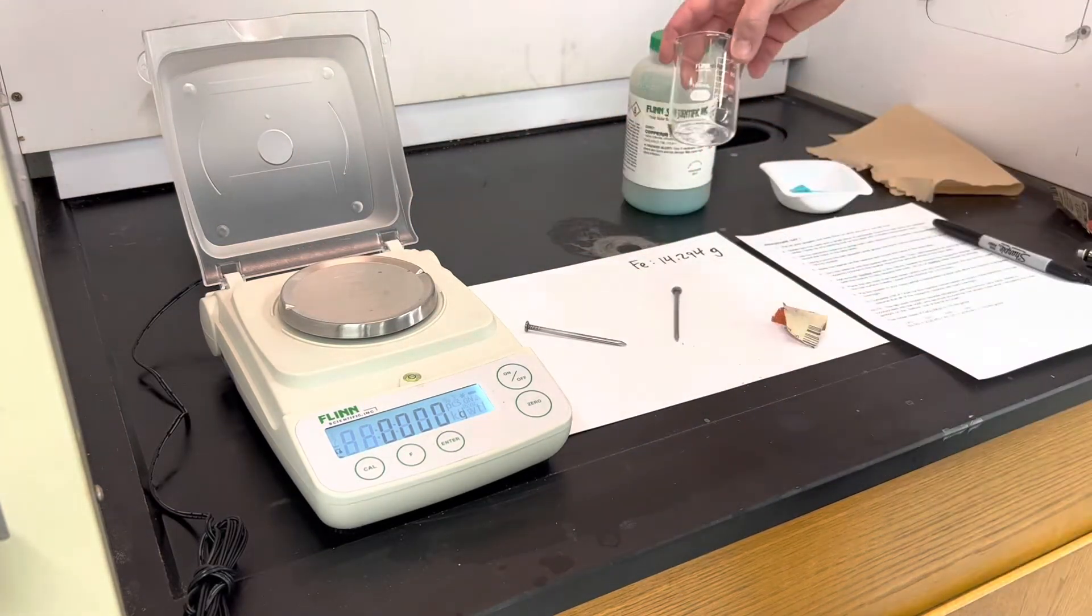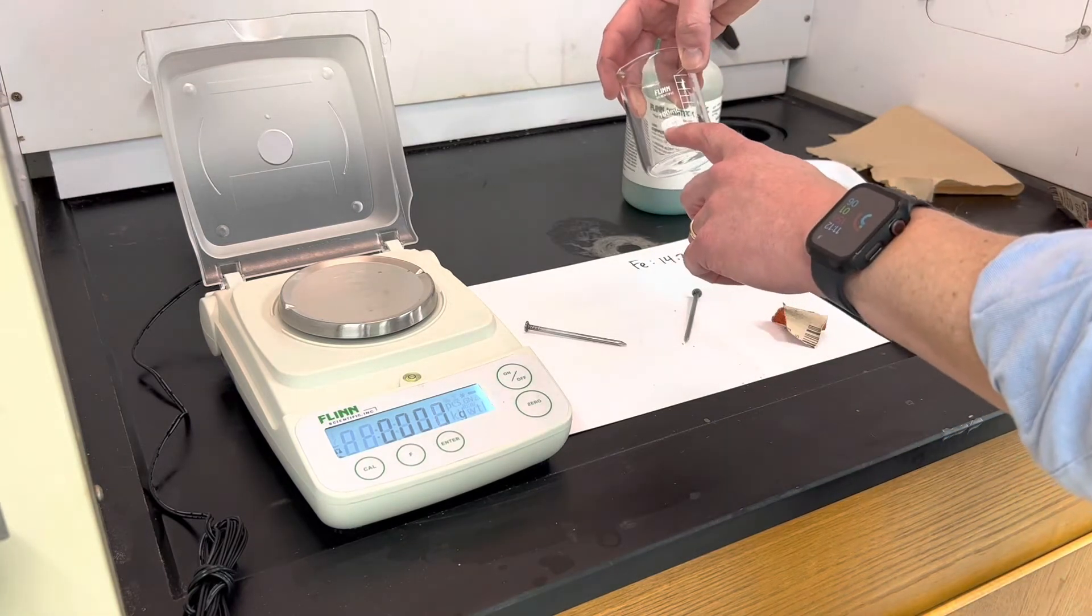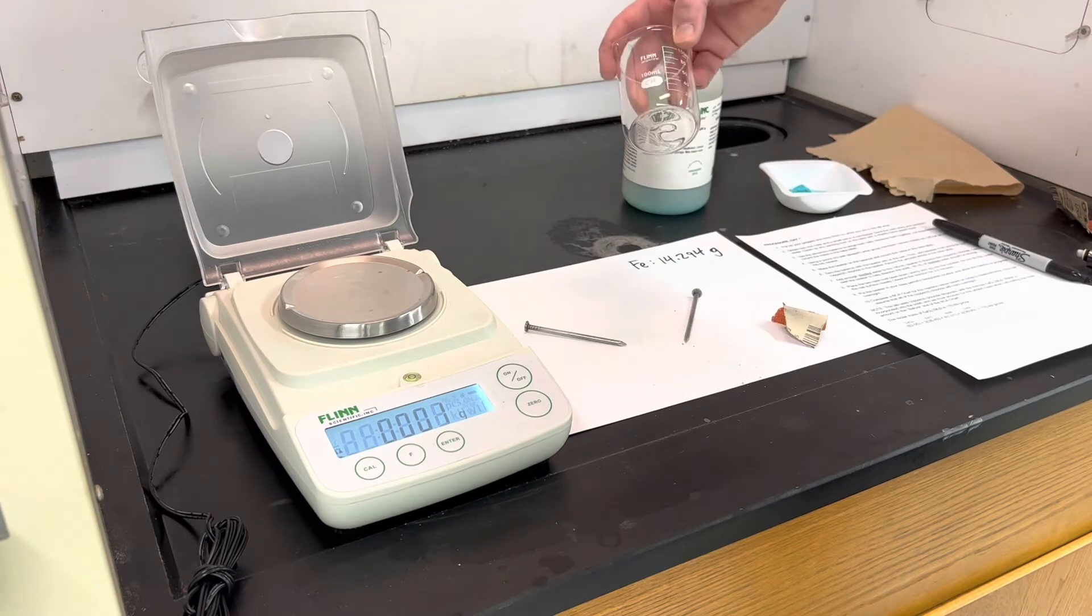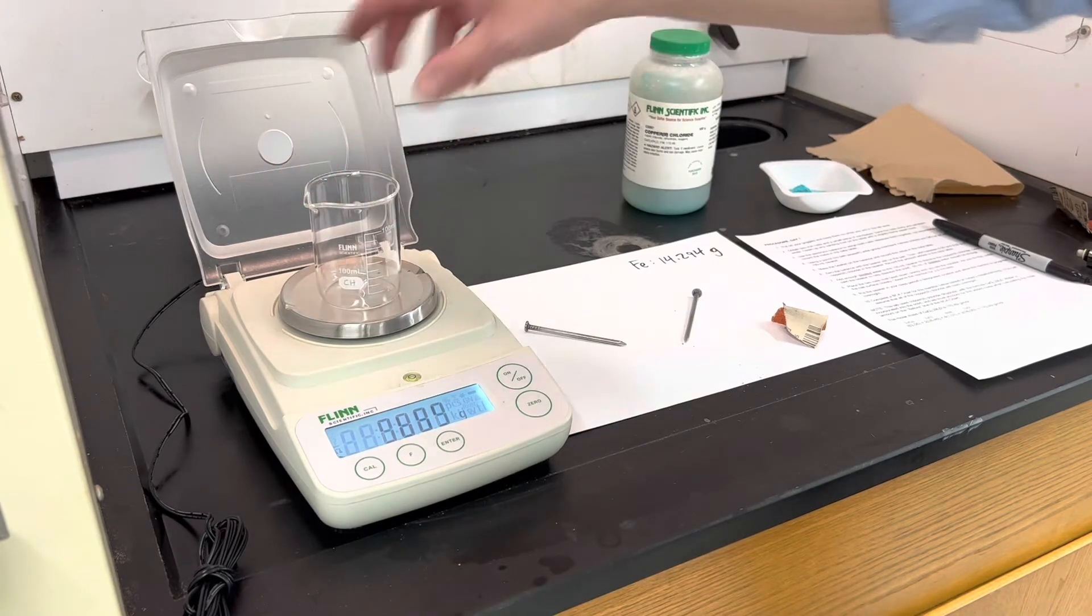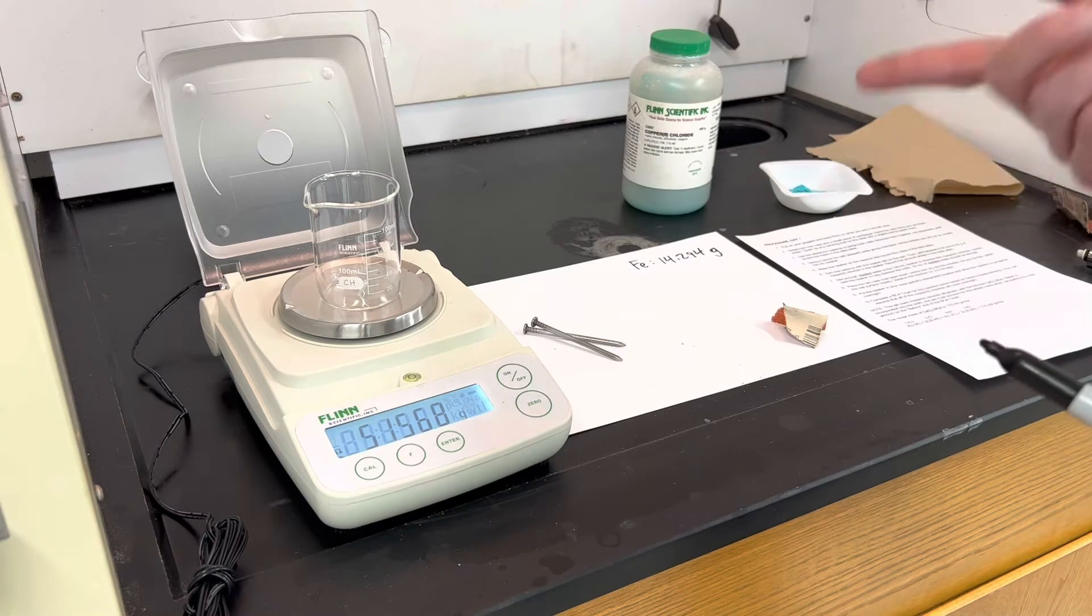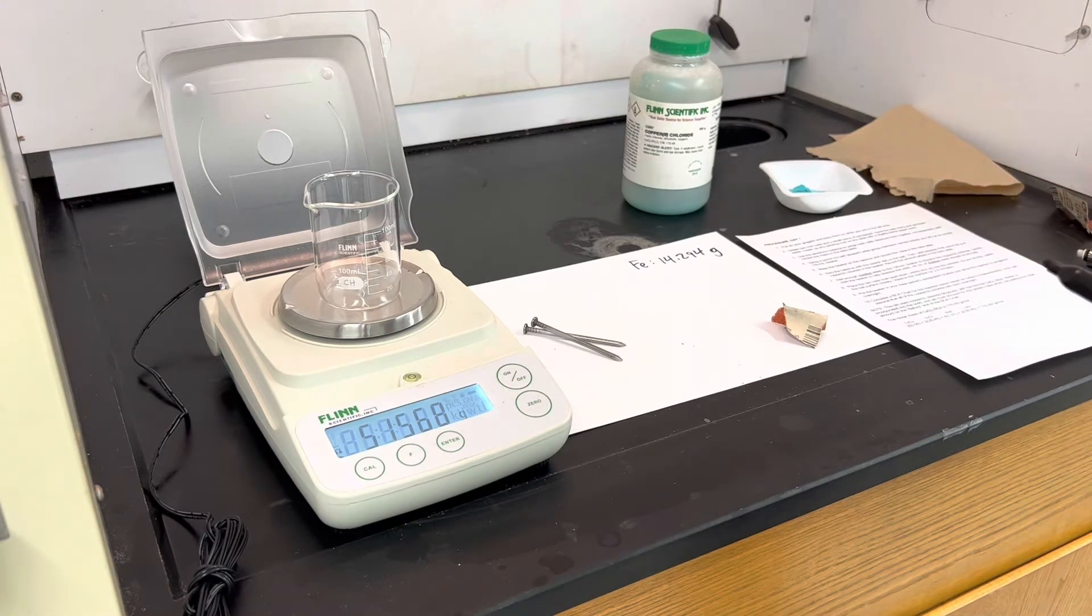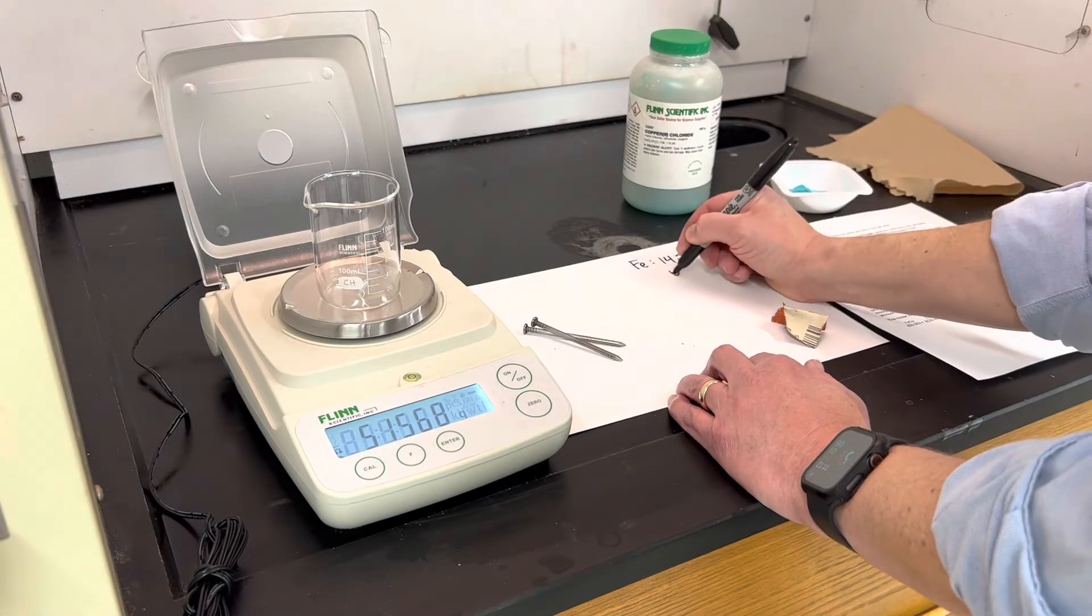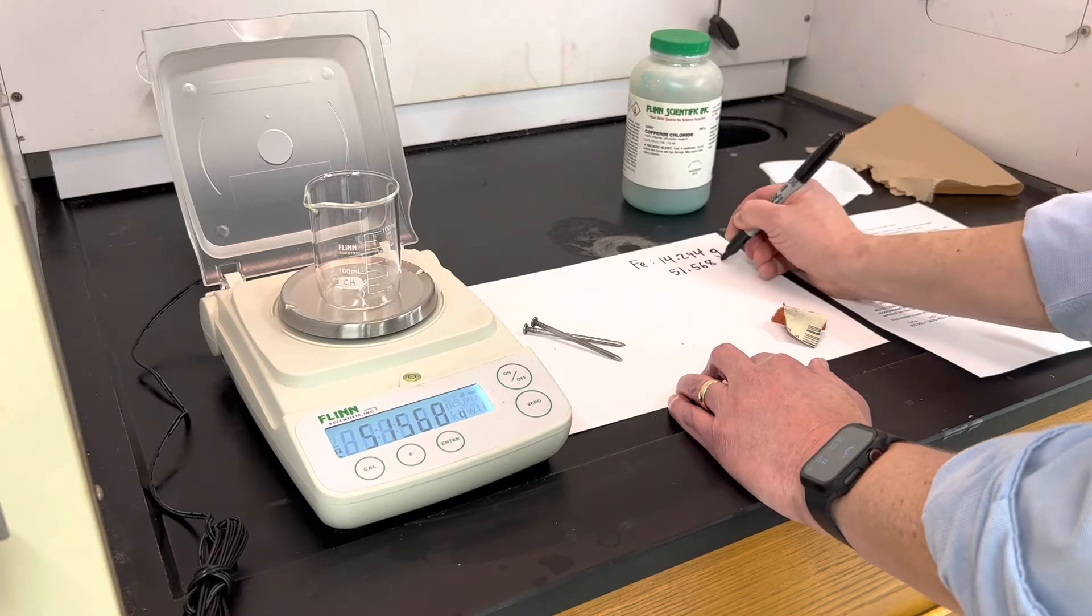Next it says to prepare a 100 milliliter beaker. We put initials on here in pencil so that could be erased later if needed. And I want to get the mass of this beaker as well. I do want to record this number. I'm going to want to be able to subtract out the mass of that beaker on my day two calculations. So the beaker is 51.568 grams.